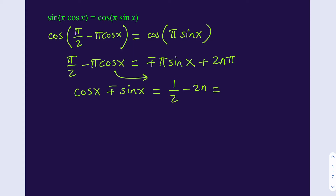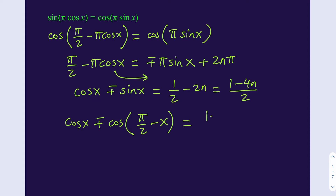Now I'm going to make a common denominator and write this as 1 minus 4n all over 2. We do have a sum or difference here, so in order to use the sum-to-product formula, let's write sine x as cosine of pi over 2 minus x. This equals 1 minus 4n over 2, where n is an integer. Applying the sum-to-product formula gives us 2 times... we add the angles and divide by 2, and the x cancels out, giving us pi over 4.